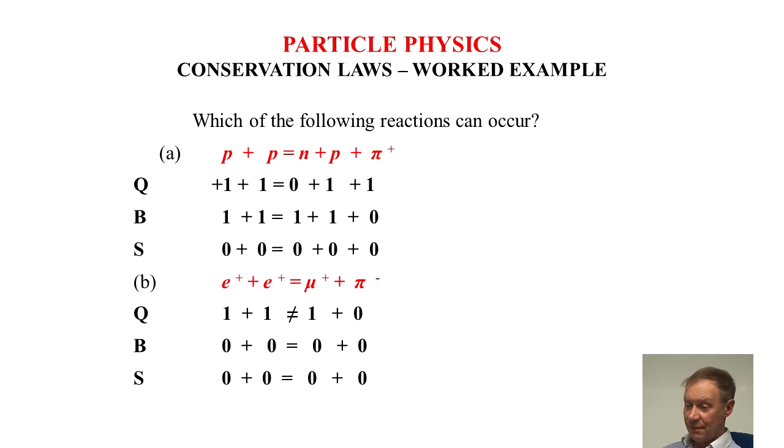In the case of B, hopefully simple inspection would show that this is not feasible because of the charge. E plus plus E plus goes to mu plus and pi minus. So we have two positive charges on the left and we have zero charge on the right.